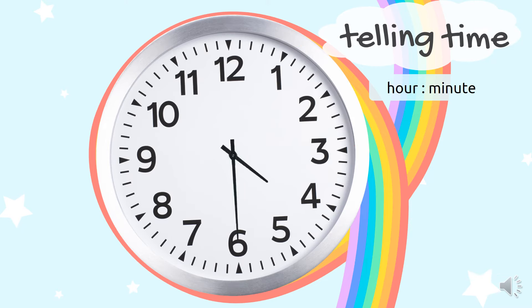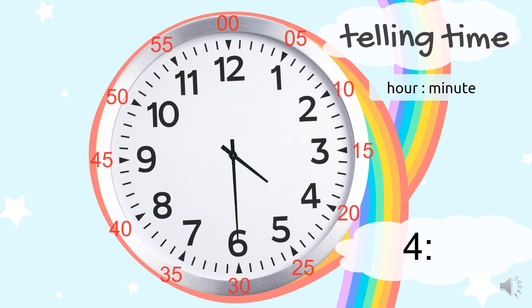Let's look at another one. Remember, we first look at the short hand for the hour. It is now between 4 and 5. So, which hour is the short hand pointing at? 4. Now, we look at the minute hand. It is pointing to the 6. Does that mean it is 4 and 6 minutes? No. We have to count by 5s to get the minutes. So, the time is 4:30, because the hour hand is pointing at 4, and after counting by 5s, we see that the minute hand is pointing to the 30 minutes.